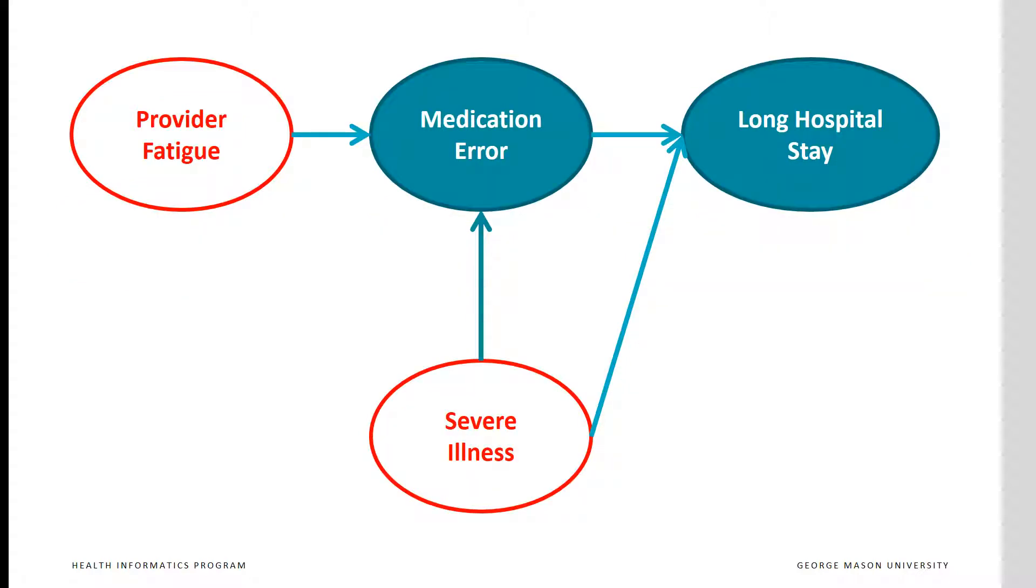Here, for example, we show no relationship between provider fatigue and severe illness. These two variables are independent from each other. There is no way that we can start from either variable and end with the other. The absence of a link in a network implies independence and vice versa. Independence implies a particular network.